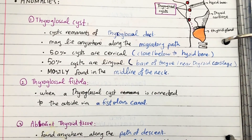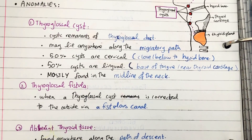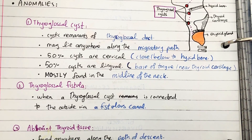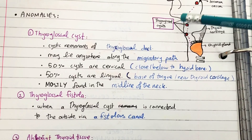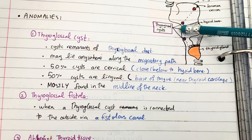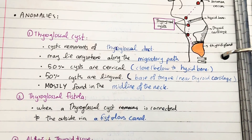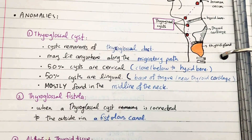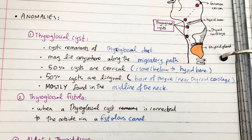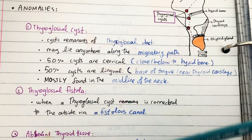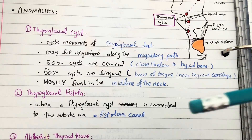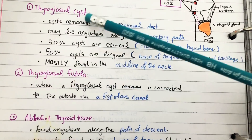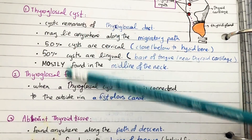The second common anomaly is the thyroglossal fistula, where the thyroglossal cyst remains connected to the outside. A fistula is a canal — essentially an opening — so the cyst is connected to the outside, and we call that a thyroglossal fistula. This is again an outcome of the incomplete disappearance of the thyroglossal duct.